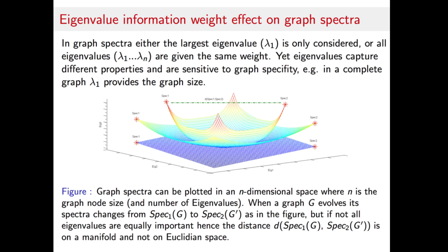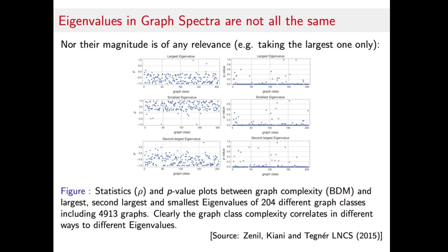These are some of the very first results we have found: the largest eigenvalue is not by far the only one highly correlated to the graph complexity, meaning that the other eigenvalues are indeed encoding important content of the original graphs, and so they shouldn't be disregarded a priori. Each dot here on the screen is a different graph class. A class can be, for example, a Cayley graph — a graph with particular algebraic properties that have implications in the size of the graph's automorphism group, with graphs having no symmetries tending to be alone in their own automorphism groups.